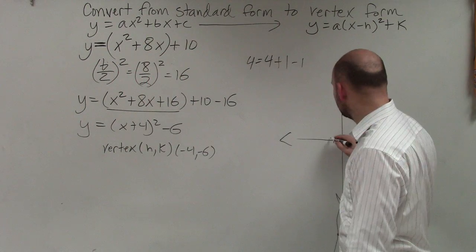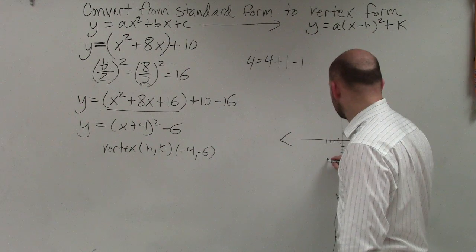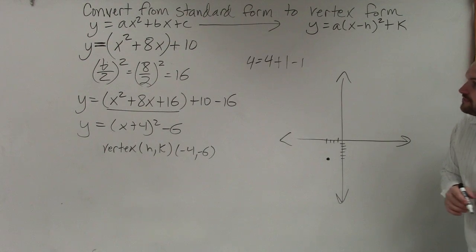So I'll go over negative 4. 1, 2, 3, 4, negative 6. 1, 2, 3, 4, 5, 6. So I'm at negative 4, negative 6.